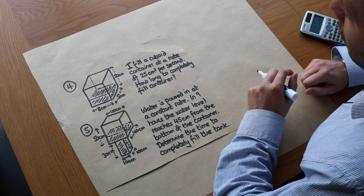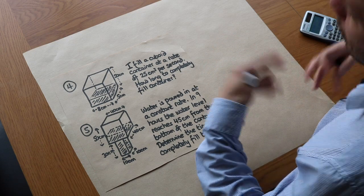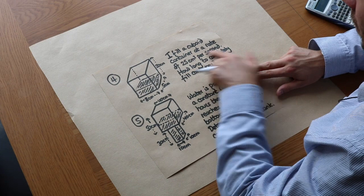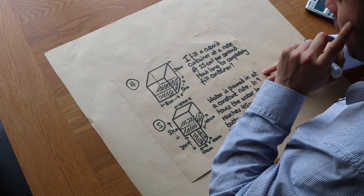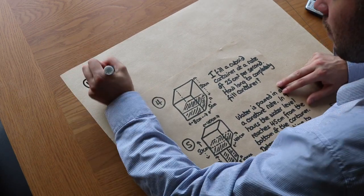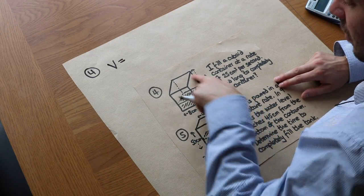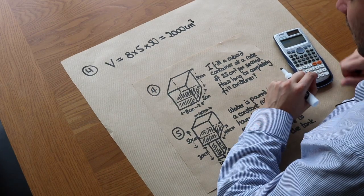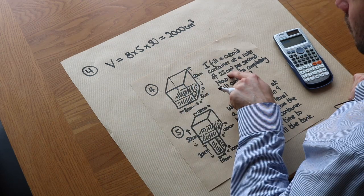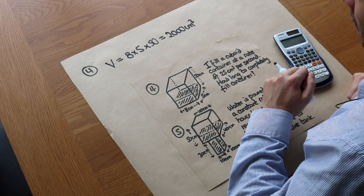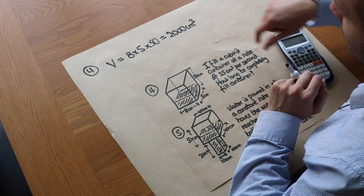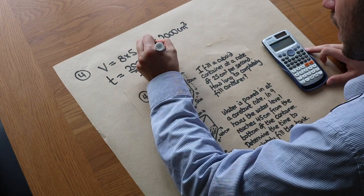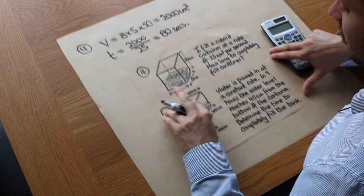Rates of flow describes the volume of liquid flowing per unit time, for example cm³ per second. Question 4: A cuboid container is filled at a rate of 25 cm³ per second. The container measures 8 × 5 × 50 cm, giving a volume of 2,000 cm³. Time to fill = 2,000 ÷ 25 = 80 seconds.